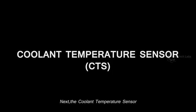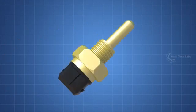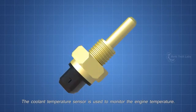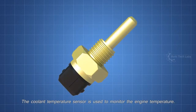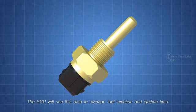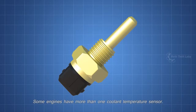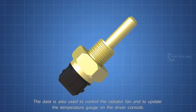Next, the coolant temperature sensor. The coolant temperature sensor is used to monitor the engine temperature. The ECU will use this data to manage fuel injection and ignition time. Some engines have more than one coolant temperature sensor.